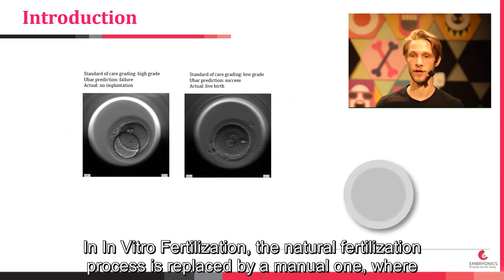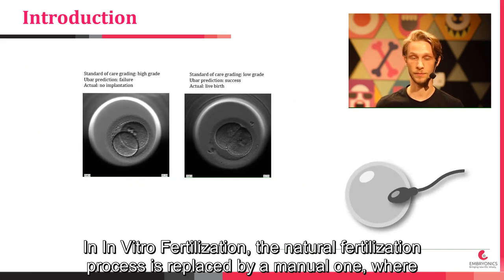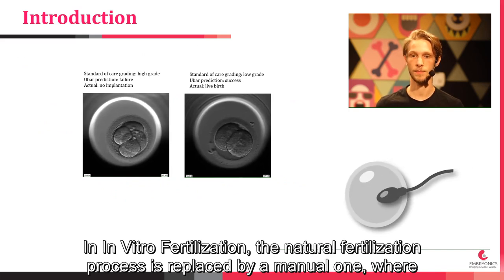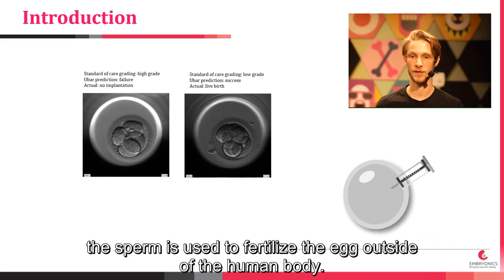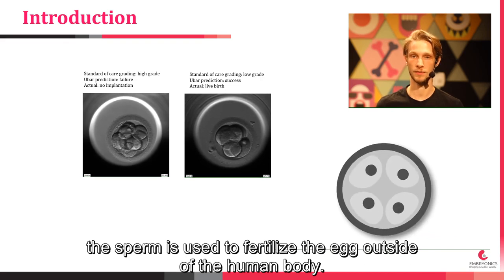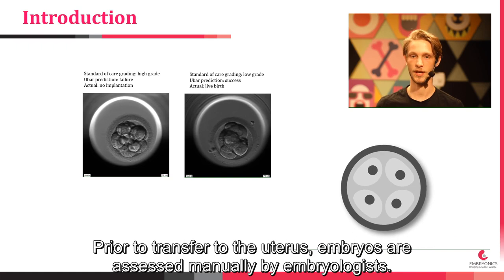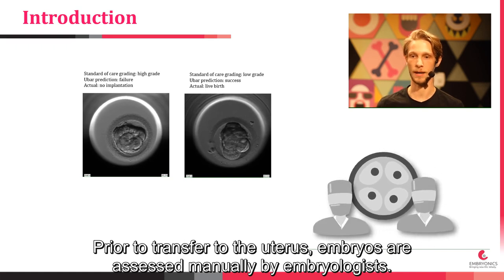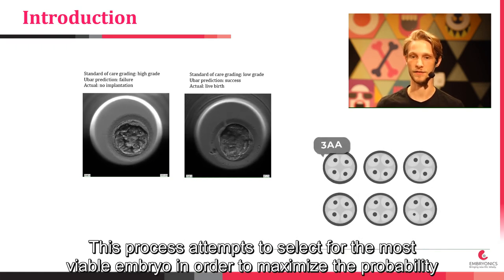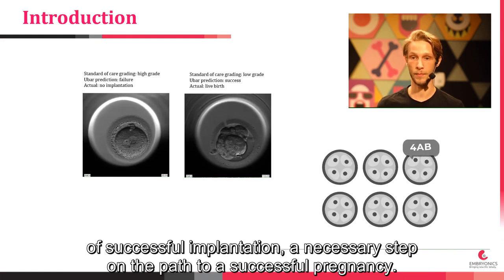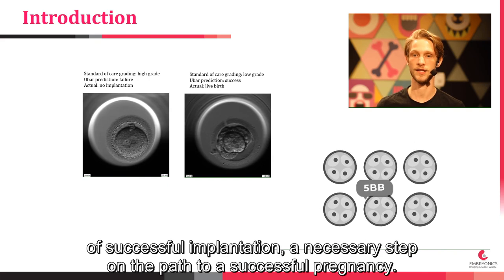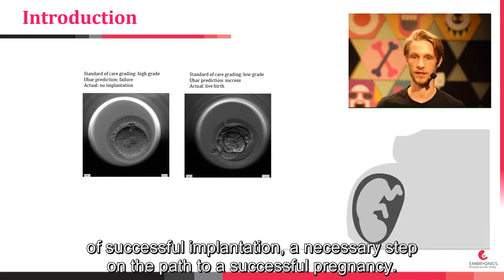In in vitro fertilization, the natural fertilization process is replaced by a manual one, where the sperm is used to fertilize the egg outside of the human body. Prior to transfer to the uterus, embryos are assessed manually by embryologists. This process attempts to select for the most viable embryo in order to maximize the probability of successful implantation, a necessary step on the path to a successful pregnancy.